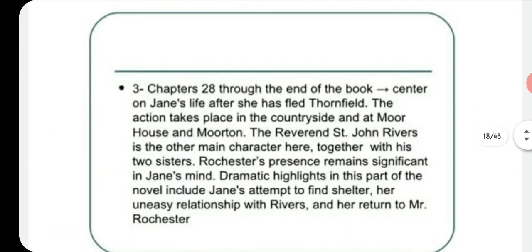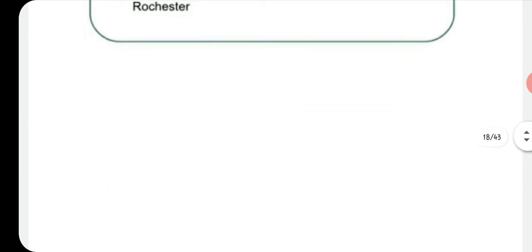The third part runs from chapter 28 through the end of the book and centers on Jane's life after she flees Thornfield Hall. The action takes place in the countryside and at Moor House. St. John Rivers proposes to Jane but she rejects him. The dramatic highlights include Jane's search for shelter, her uneasy relationship with the Rivers family, and her eventual return to Mr. Rochester.